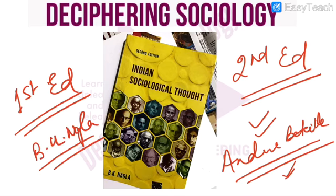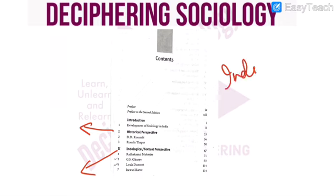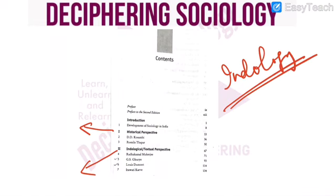Now let us look at the index — what all chapters do we have here? When you look at the first page of the contents, you will find that there are two perspectives given here. The first one is the historical perspective and the second one is the indological or textual perspective. If you go through the syllabus, you will find that the first perspective given is Indology. So we do not have to cover the historical perspective.